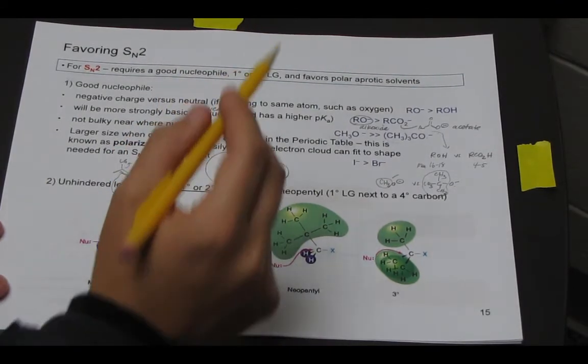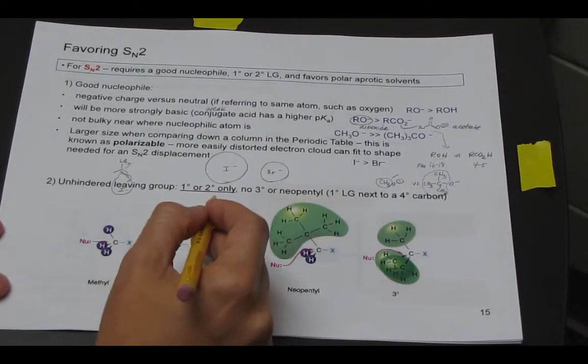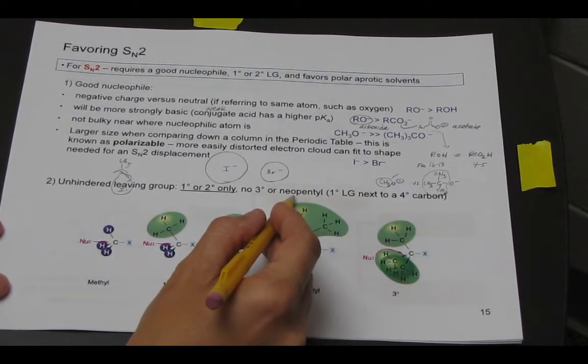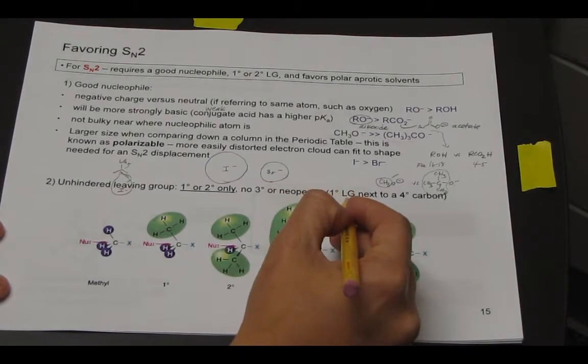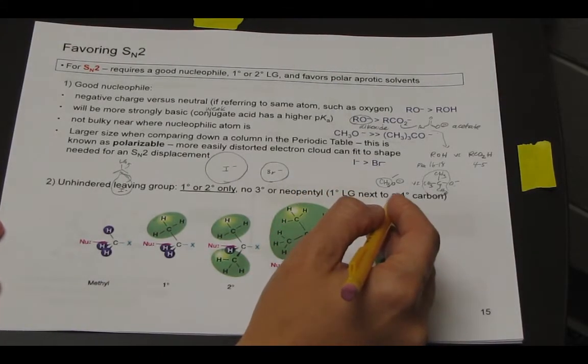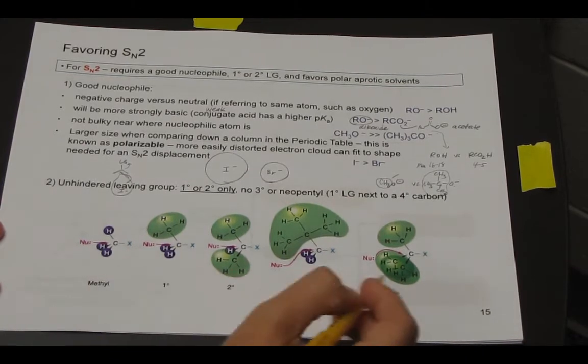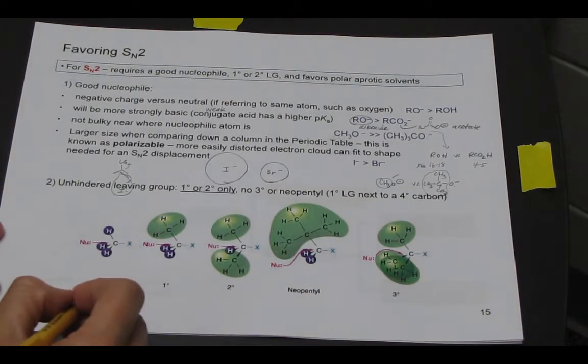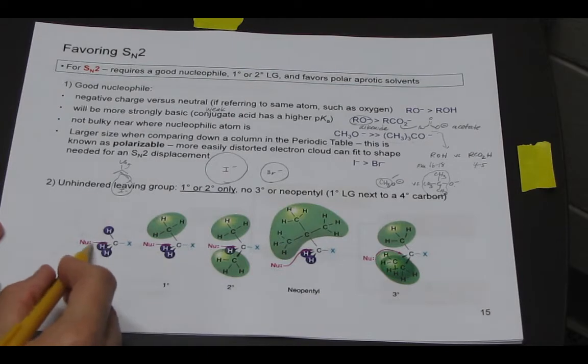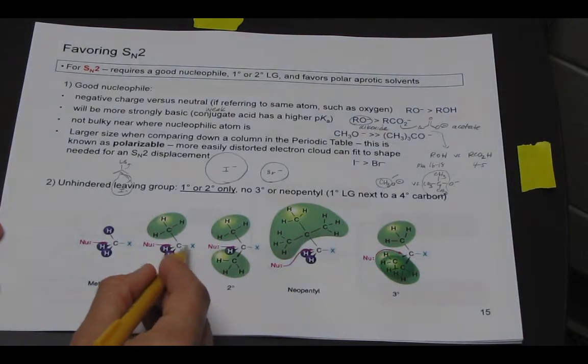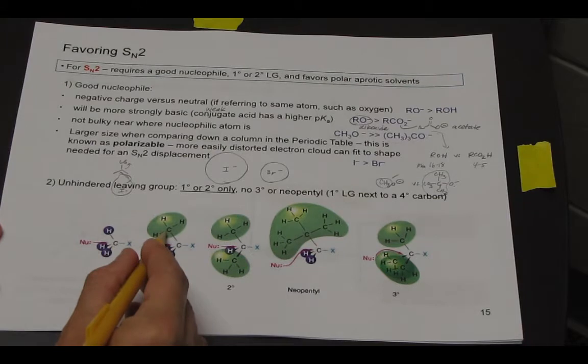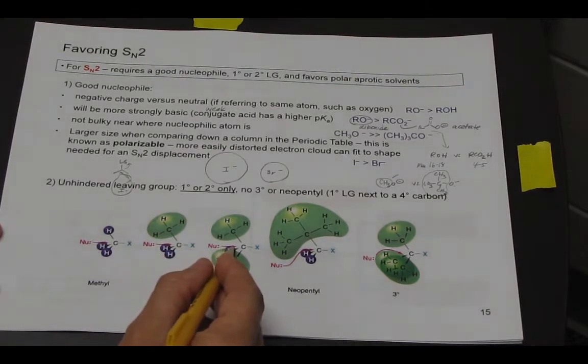The second point is we want primary or secondary leaving group only. We can't have tertiary, and we can't have what's called neopentyl. Neopentyl means you have a primary leaving group, but it's next to a quaternary carbon. So let's look at the buildup first. If we just have methyl, methyl is considered no substitution. It is easy for a nucleophile to attack. If we have primary or leaving group is attached to a carbon that's attached to one other carbon, our nucleophile can attack, and it can attack for secondary too.